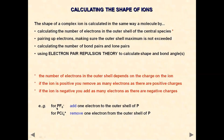There are two examples here. First, if this is PF6 negative, there is a negative charge, so simply add one electron to the outer shell of phosphorus. In this example, PCl4 positive has one positive charge on the molecule, so simply remove one electron from the outer shell of phosphorus. We are going to look at lots of examples and you should be fine at the end of this lesson.